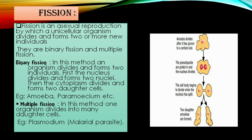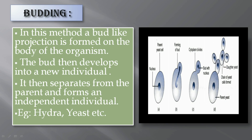Multiple fission is where a single cell divides to form many daughter cells. Example: plasmodium, the malarial parasite.